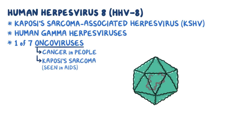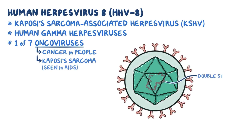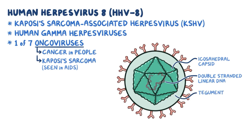Human herpesvirus 8 is a large, double-stranded, linear DNA virus surrounded by an icosahedral capsid, which is a spherical protein shell made up of 20 equilateral triangular faces. The capsid is covered by a protein layer called the tegument, and finally enclosed in an envelope, which is a lipid membrane that contains viral glycoproteins and is acquired from the nuclear membrane of host cells.